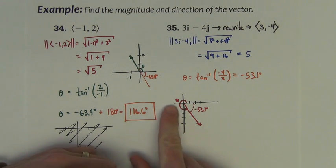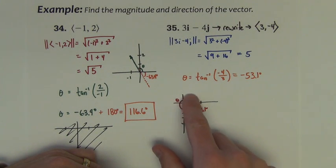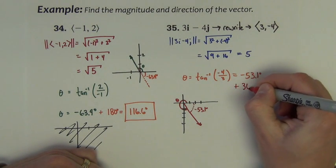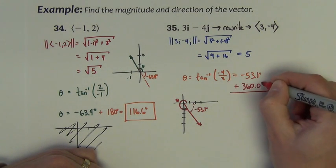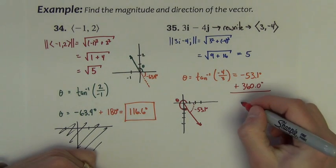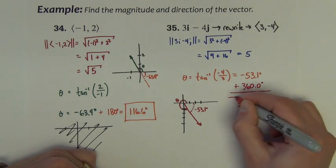So here we have what we want and what the calculator gave us. So to adjust what the calculator gave us to what we want, notice that these two angles, what we want and what we're given, form a full circle. We'll just add 360 degrees to that. And if we add 360, we get 306.9 degrees.